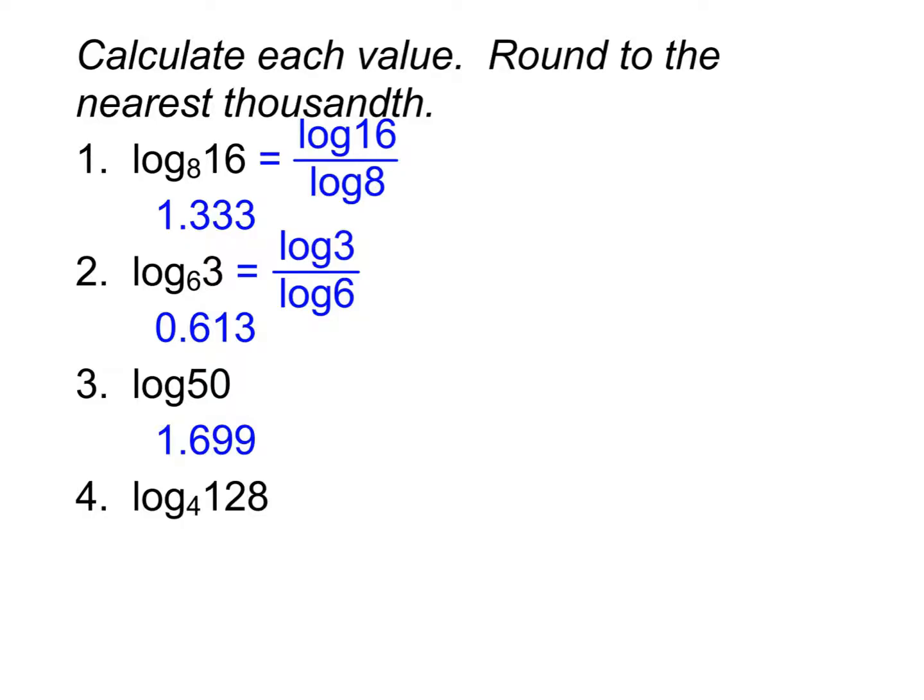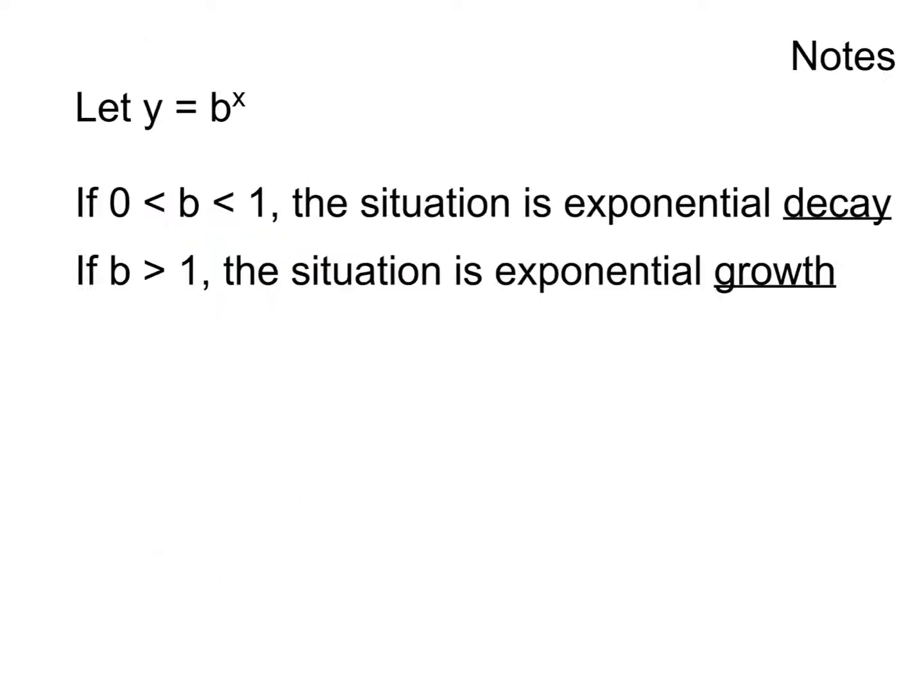And then finally, for number 4, we end up doing log 128 divided by log 4. So we end up getting 3.5 there, exactly 3.5 for that one. Now into your notes, I'd like you to please add this information on the difference between exponential growth and exponential decay.